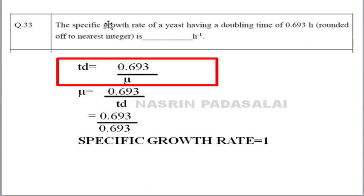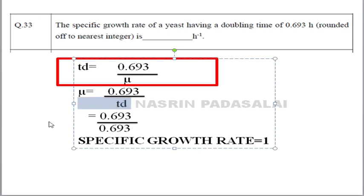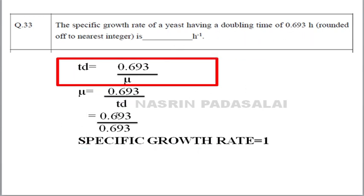Next question: the specific growth rate of yeast with a doubling time of 0.693 hours. The formula is: T_d = 0.693 / μ, where μ is the specific growth rate. Rearranging: μ = 0.693 / T_d = 0.693 / 0.693 = 1. The specific growth rate is 1 per hour. This is an easy NAT-type question. Note there is no negative marking, but also no partial marking.